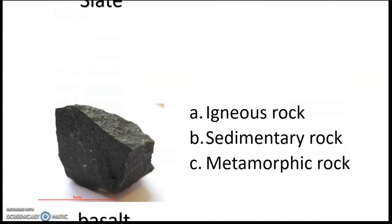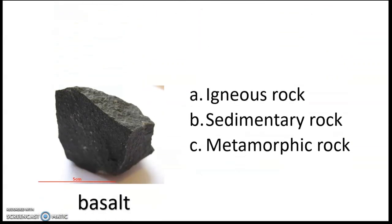Next: basalt. A — igneous rock, B — sedimentary rock, C — metamorphic rock. What is the answer? All right, basalt is an igneous rock.